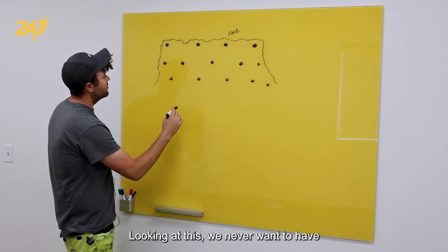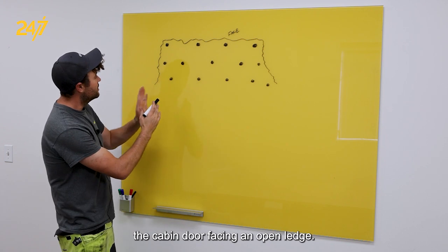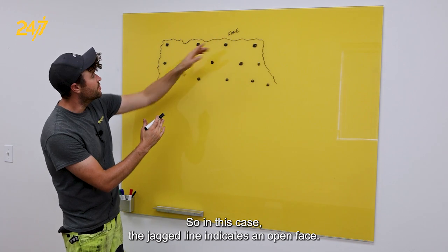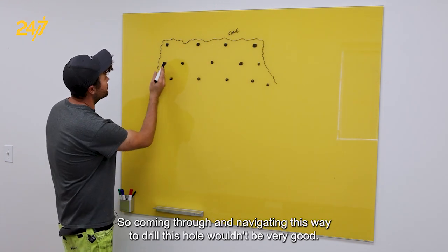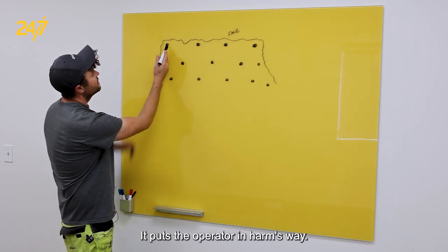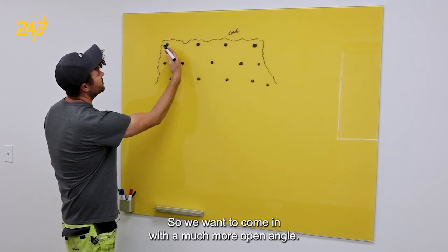Looking at this, we never want to have the cabin door facing an open ledge. In this case, the jagged line indicates an open face. So coming through and navigating this way to drill this hole wouldn't be very good. It puts the operator in harm's way. So we want to come in with a much more open angle.